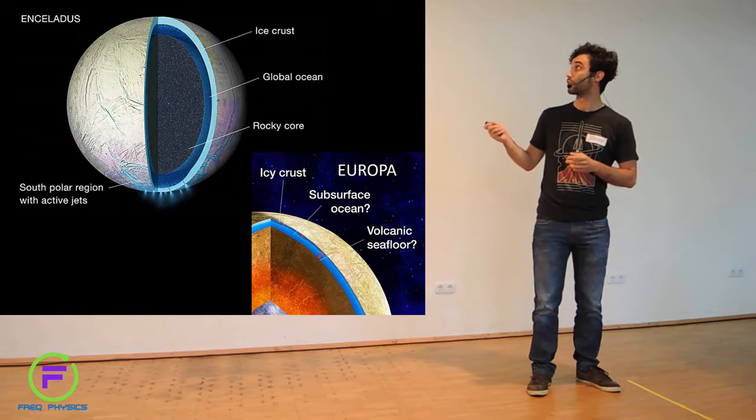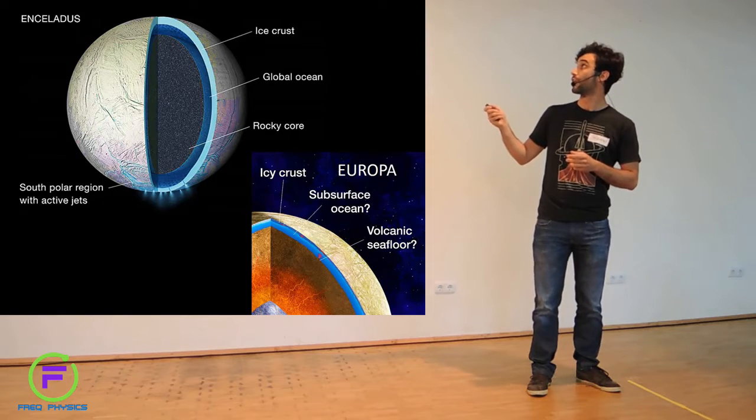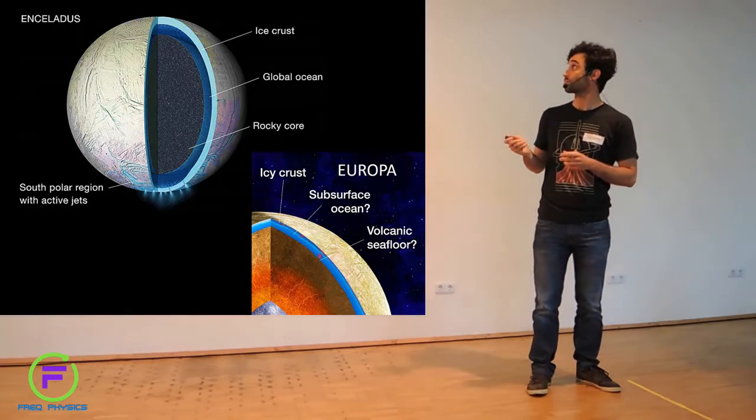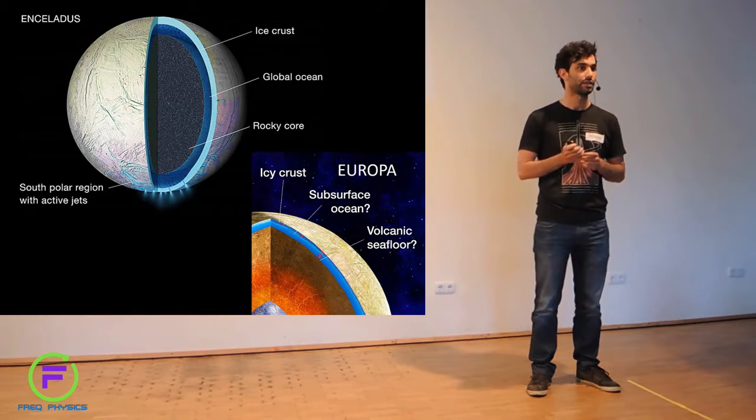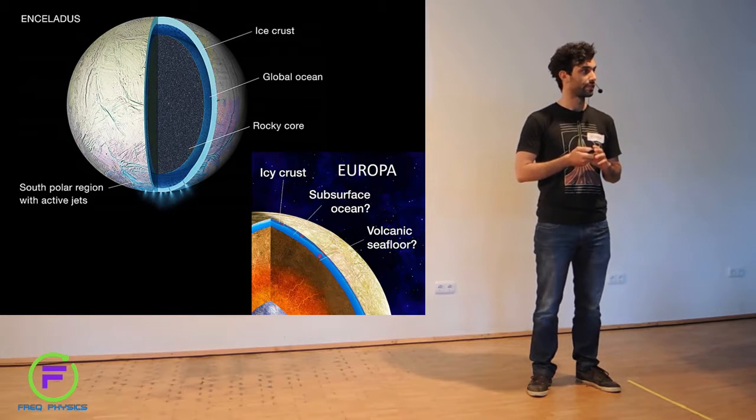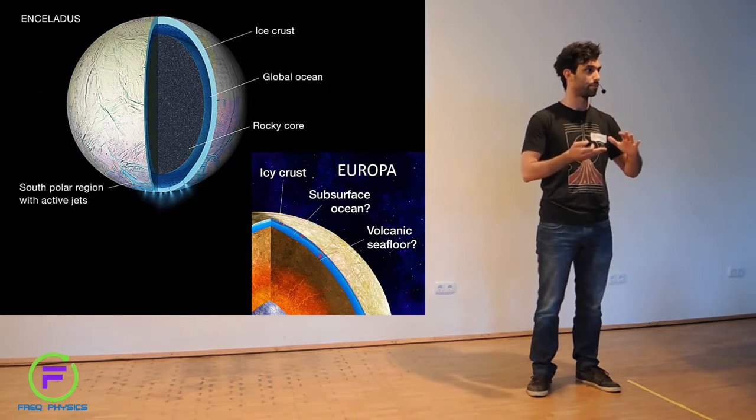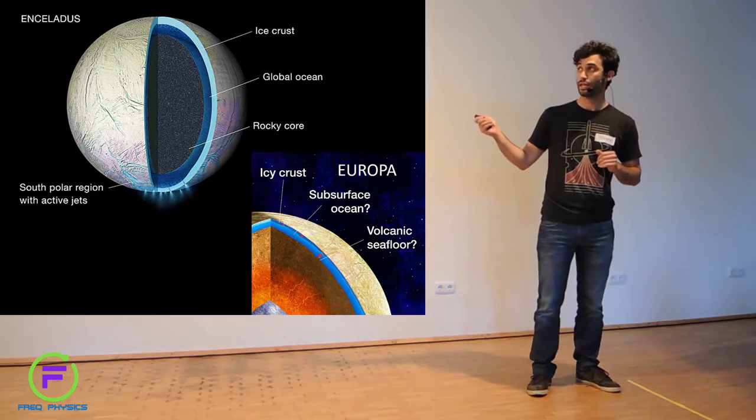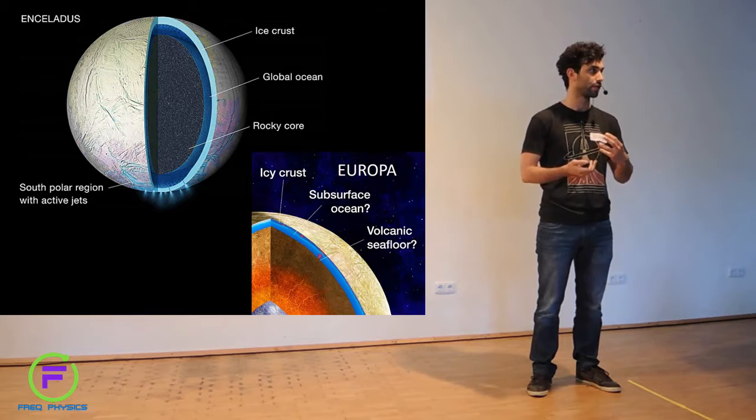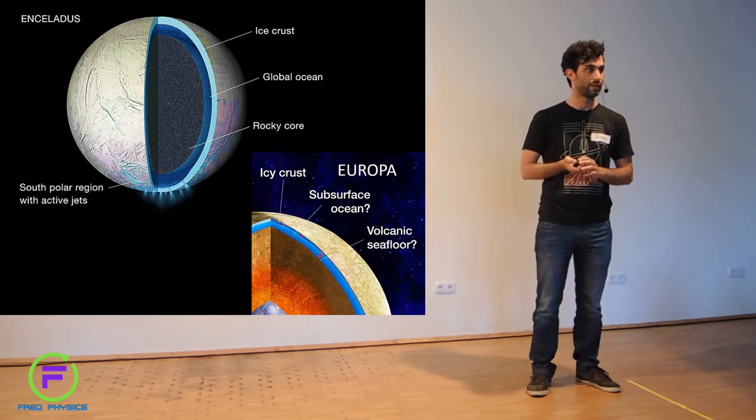Enceladus consists of a rocky core, a layer of liquid water ocean around that rocky core, and an ice crust that is around 10 to 30 kilometers thick, even thinner at some points. On the south pole, we have found that there are geysers coming out from the ocean and they go all the way very high into space.